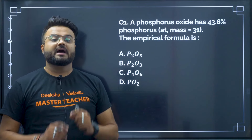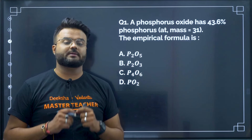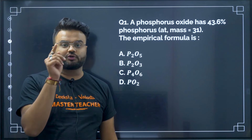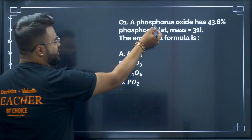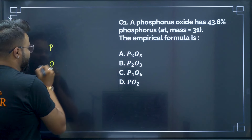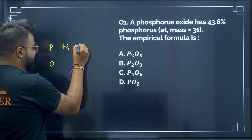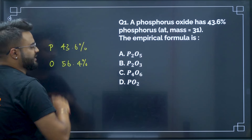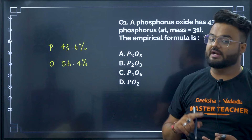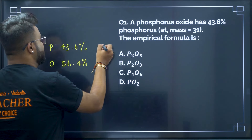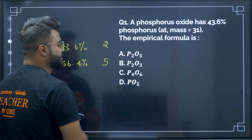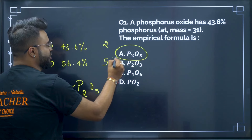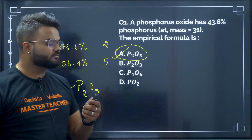Question 1: A phosphorus oxide has 43.6% of phosphorus, atomic mass is 31. Find the empirical formula. In phosphorus oxide, we have phosphorus and oxygen. Phosphorus is 43.6%, so oxygen is 100 minus 43.6 = 56.4%. You take the atomic ratio, simplest ratio, then whole number ratio. The whole number ratio comes out to be 2 and 5, giving P₂O₅ — phosphorus pentoxide. Therefore option A is your correct answer.